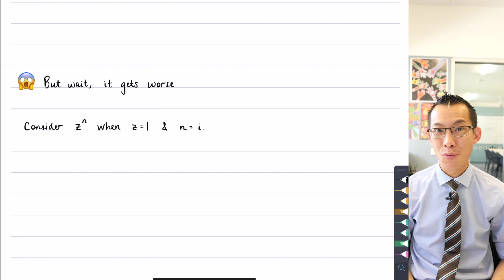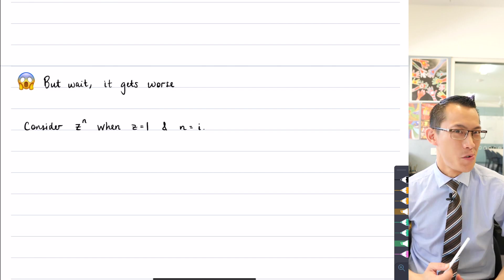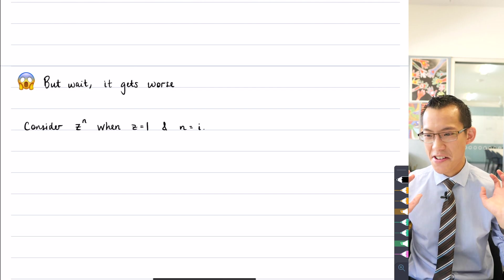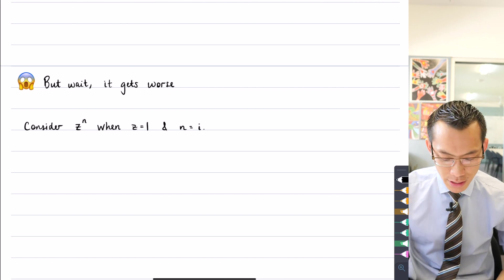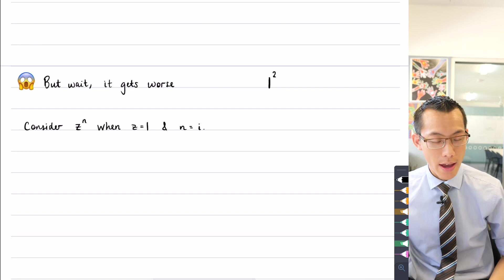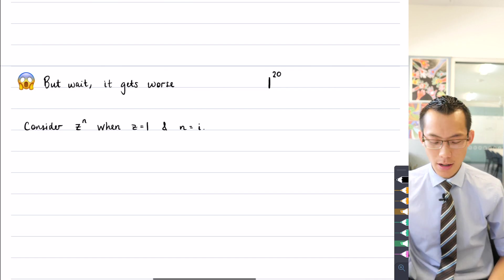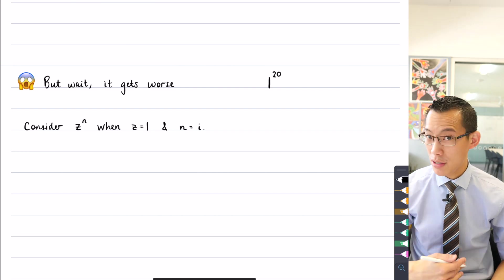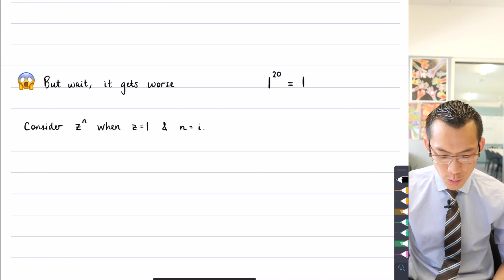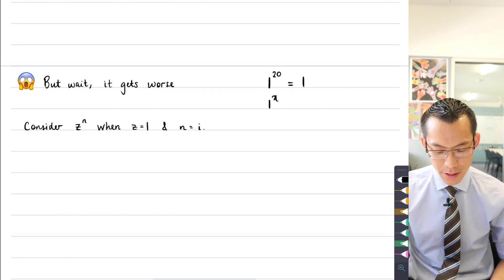Now you may have an instinct in your mind from what you've learned in the real number world already. One of the sort of fundamental things in index laws is if you take one to the power of anything like one squared or one to the power of twenty or one to the power of even the fractions that we looked at before, we would have said all of those are equal to one.